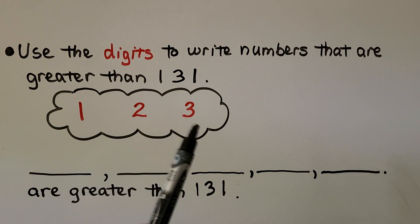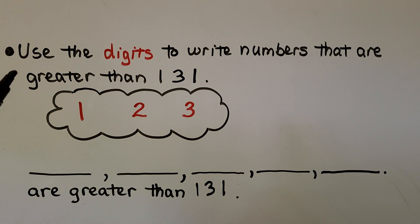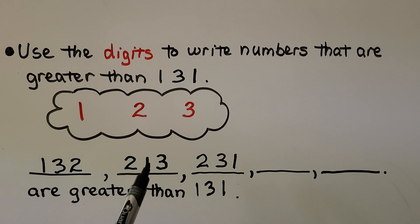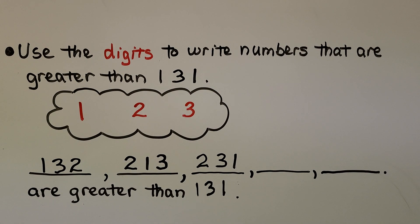Here we have three digits in a little cloud. It's telling us to use the digits to write numbers that are greater than 131. We need to rearrange these digits to come up with numbers greater than 131. 132 is greater than 131 — it has one more one. If we put a 2 in the hundreds place, that will be greater than 131. 213 is greater than 131.